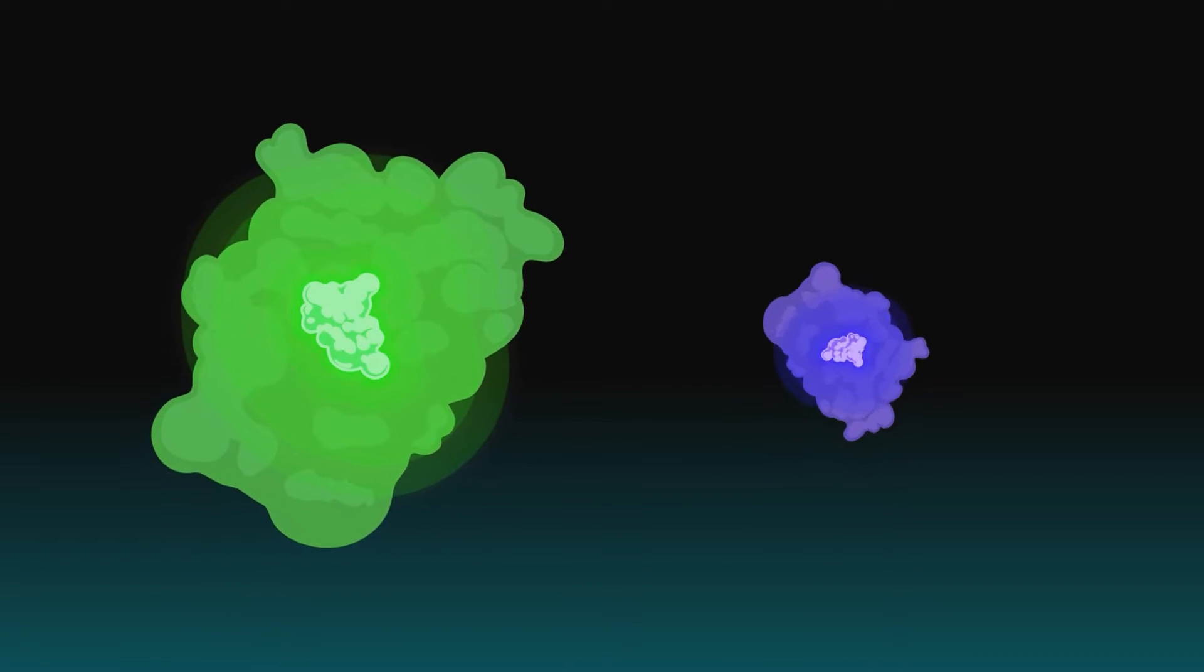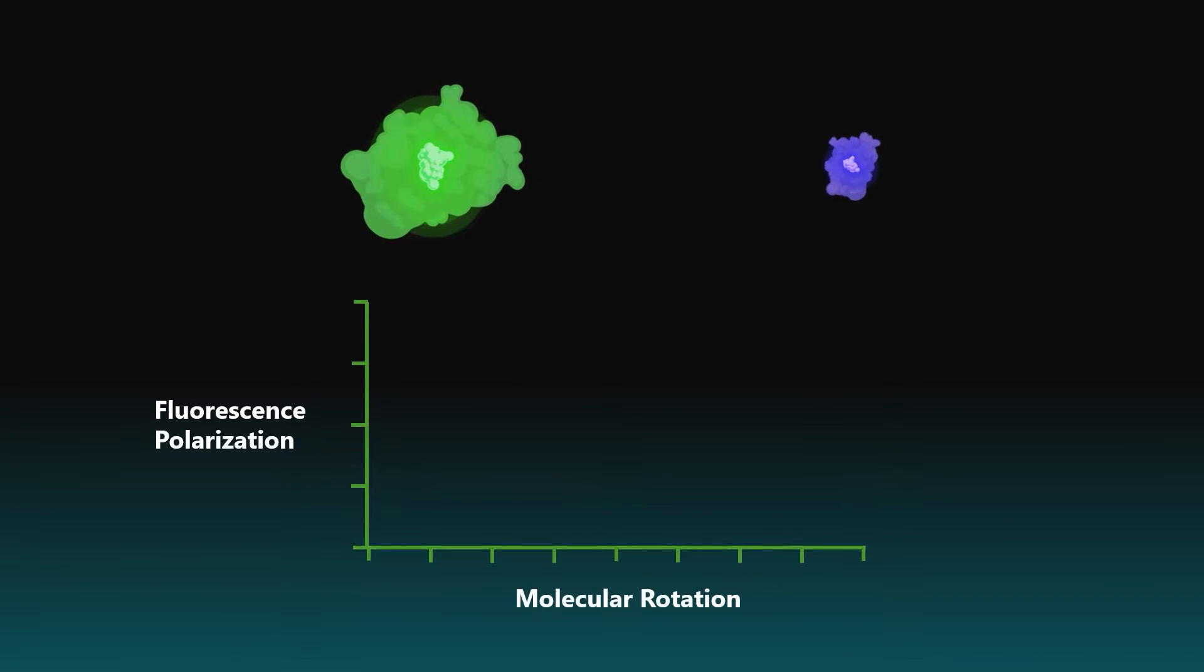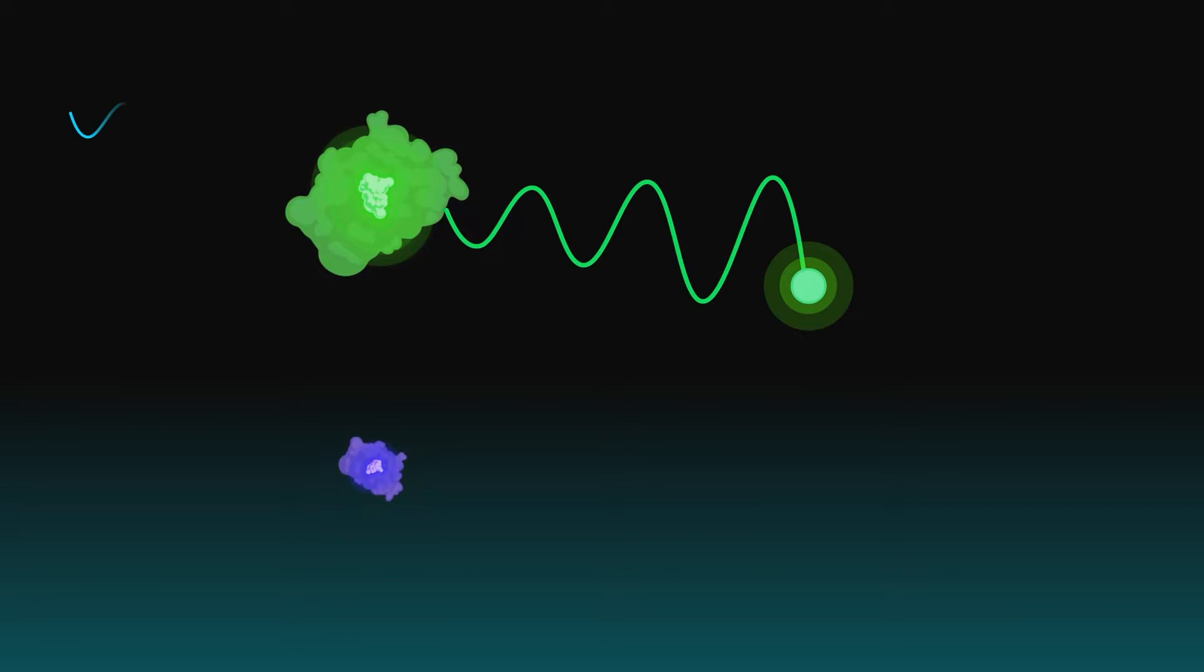At its core, fluorescence polarization measures the movement of molecules in a solution derived from the fact that the degree of polarization of a fluorophore is inversely related to its molecular rotation. If the molecule is large, its rotation is slow and movements are small. When this large fluorescent molecule is excited by polarized light, it emits light waves vibrating in a single plane aligned with the polarized excitation.